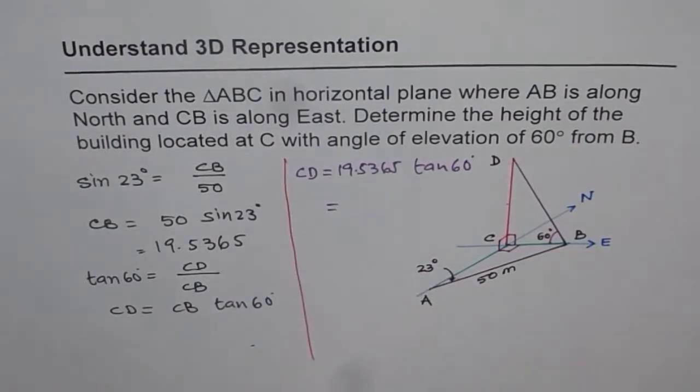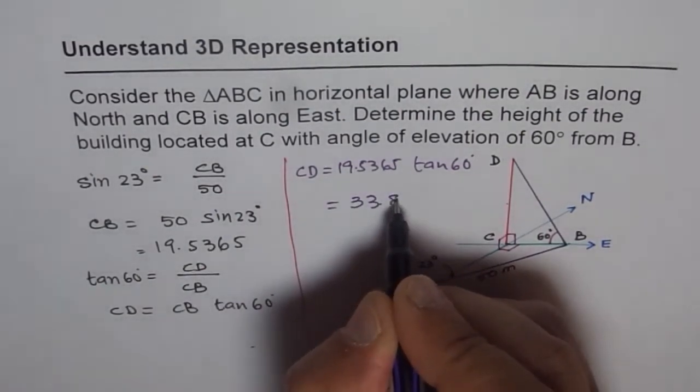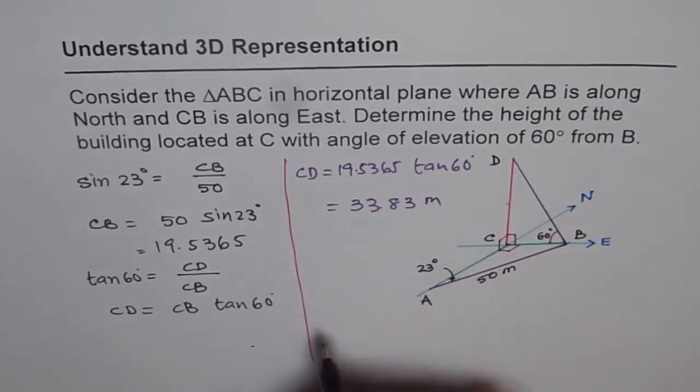So this is equal to, let's multiply this by tan of 60, and what we get is 33.83. The units are meter, of course, and we can write down our answer now.